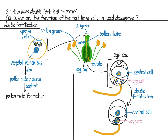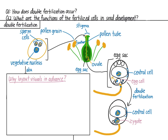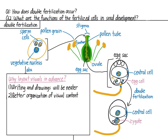Before hitting the record button, it's a good idea to lay out all your visual content in advance. What you're seeing here is a layout of all my visuals that I showed in my double fertilization video. First of all, you can take your time writing words and making drawings so they'll be a lot neater. Second, you can be more careful about how you lay out your visuals on the page and be more organized about where everything goes.